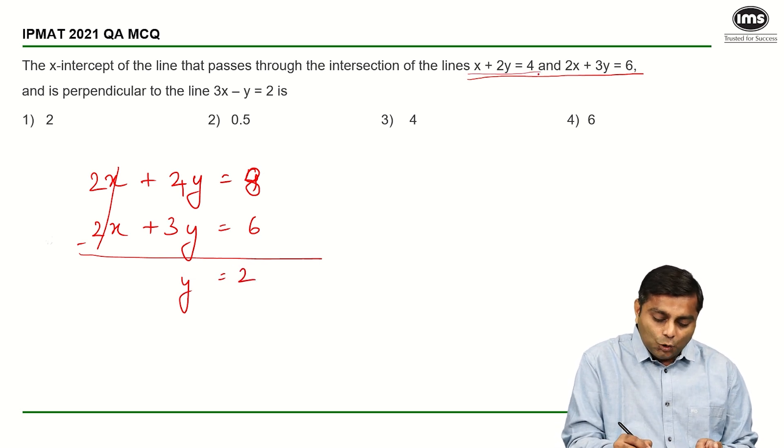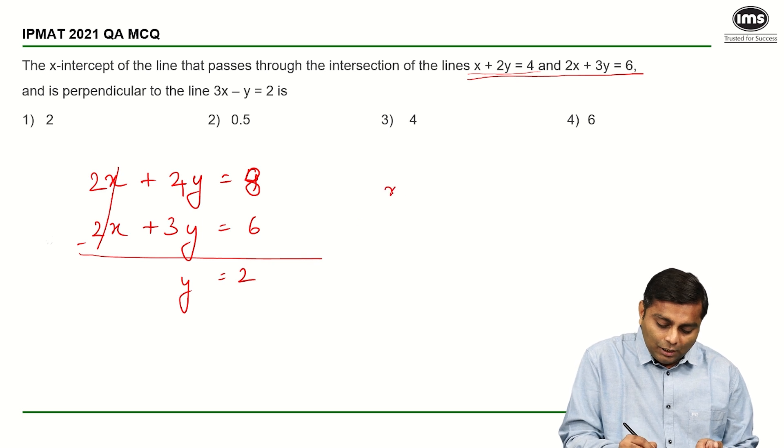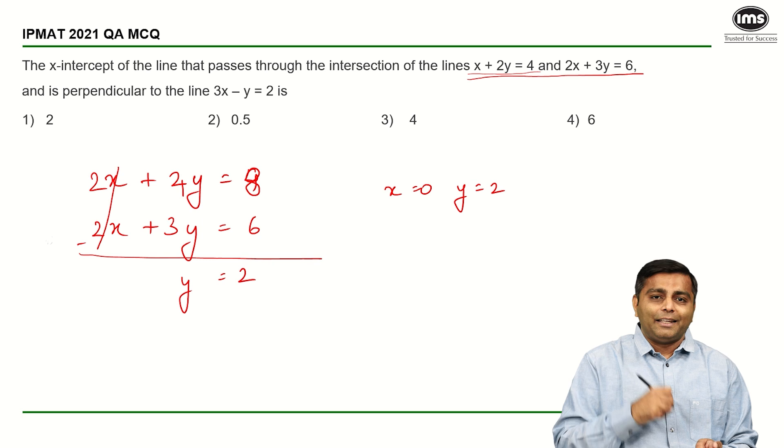If my value of y is 2, if I just put it in this equation, I am going to get x as 0. So x is equal to 0, y is equal to 2 is one point through which my line is passing.